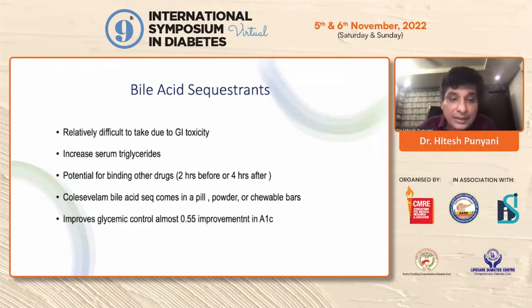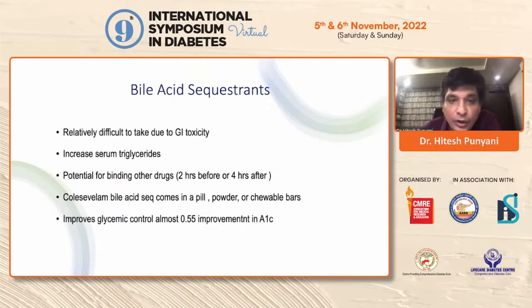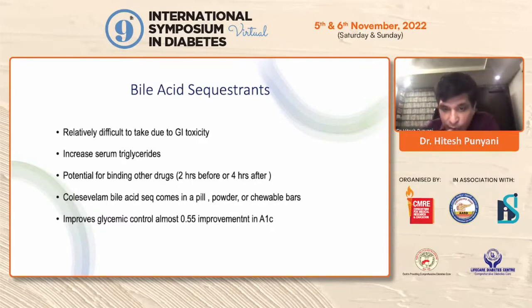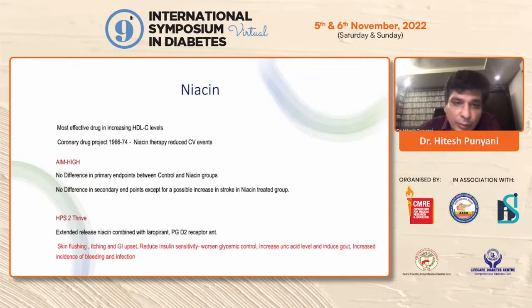Bile acid sequestrants are challenging because of GI toxicity. The dose is around 3.7 grams, and due to strong drug interactions, they must be given two hours before or four hours after other drugs. In patients with diabetes and CVD already on multiple drugs, this becomes very challenging. Another disadvantage is that it increases serum triglycerides. One advantage, however, is an approximately 0.5% reduction in HbA1C levels in patients who are already hyperglycemic.